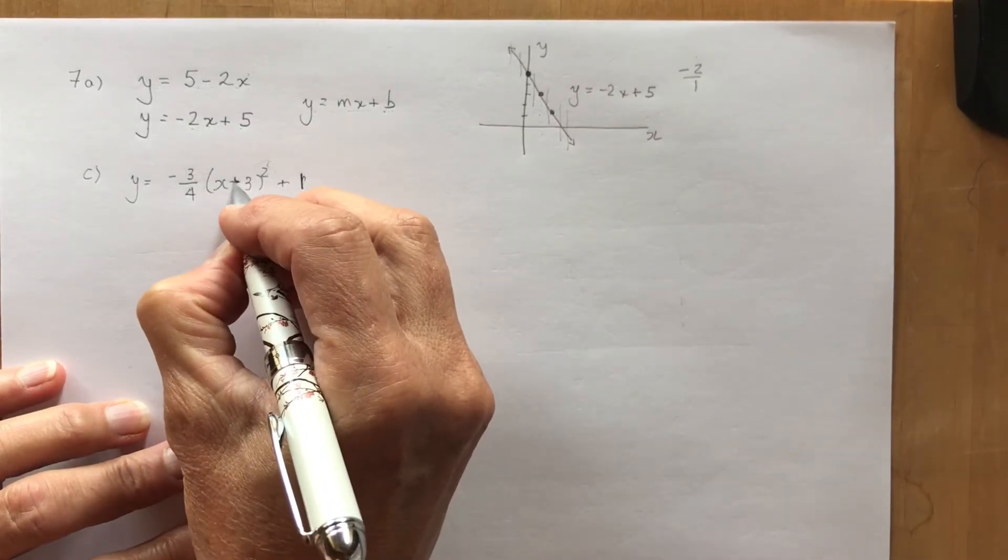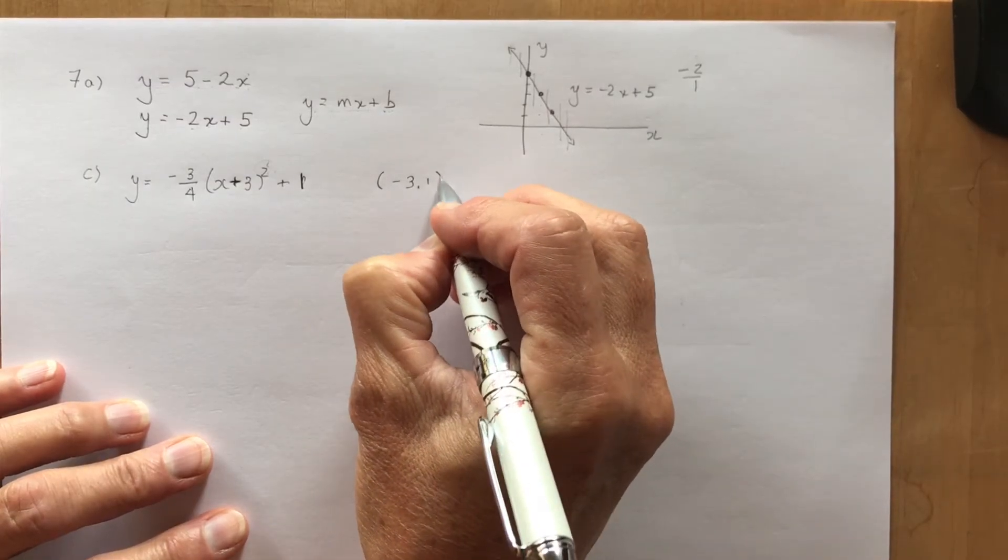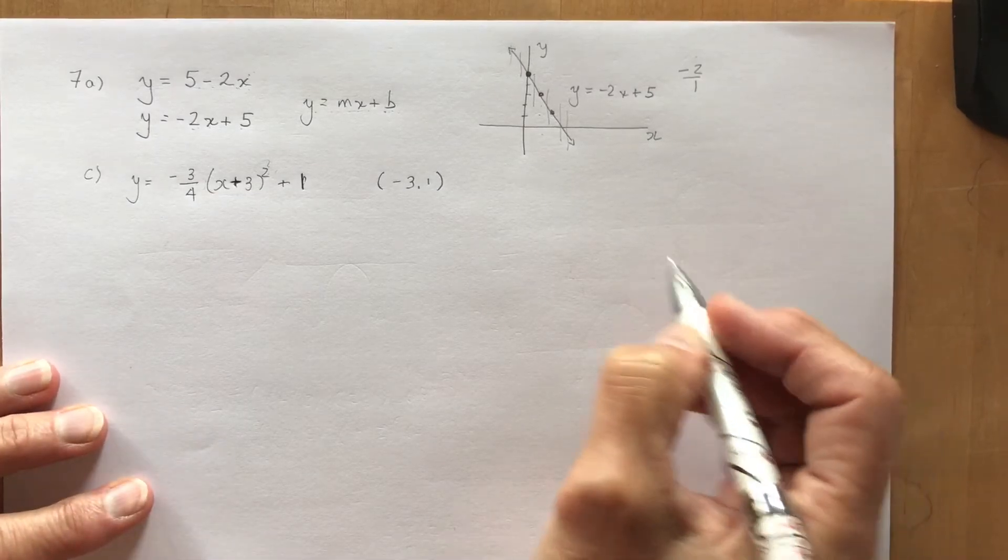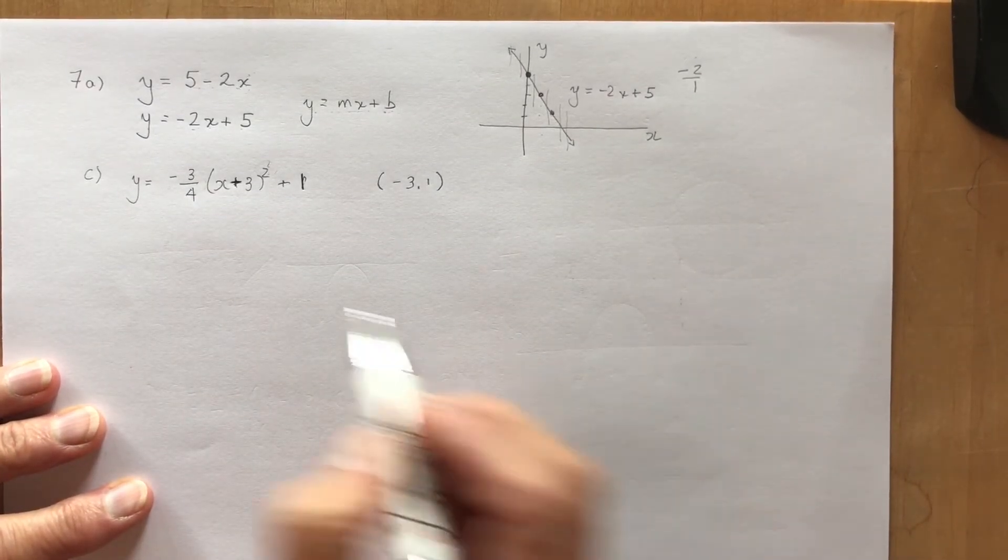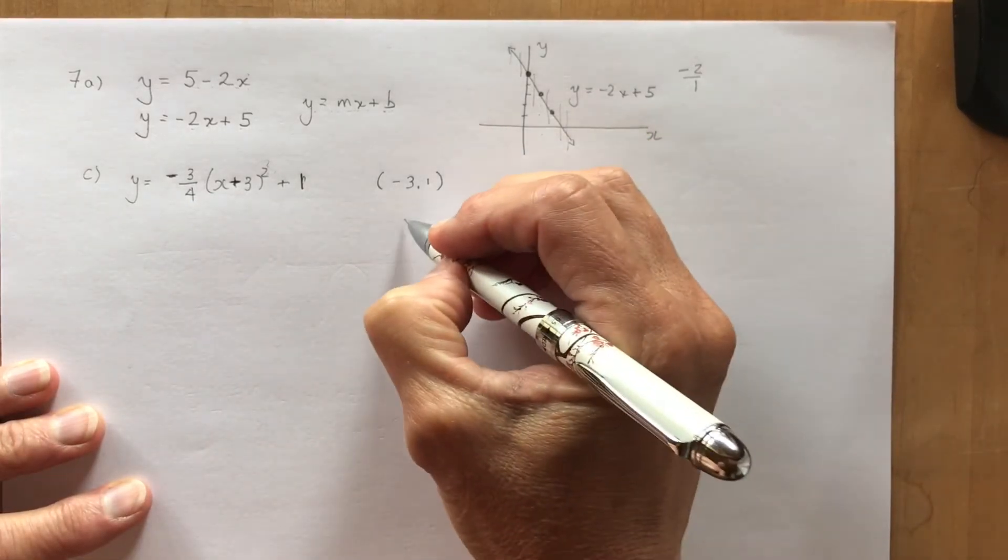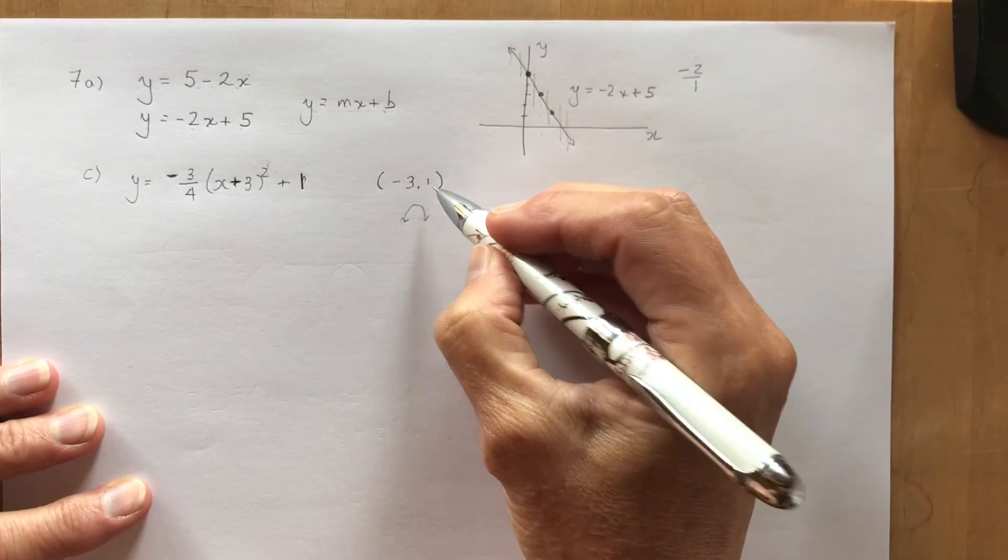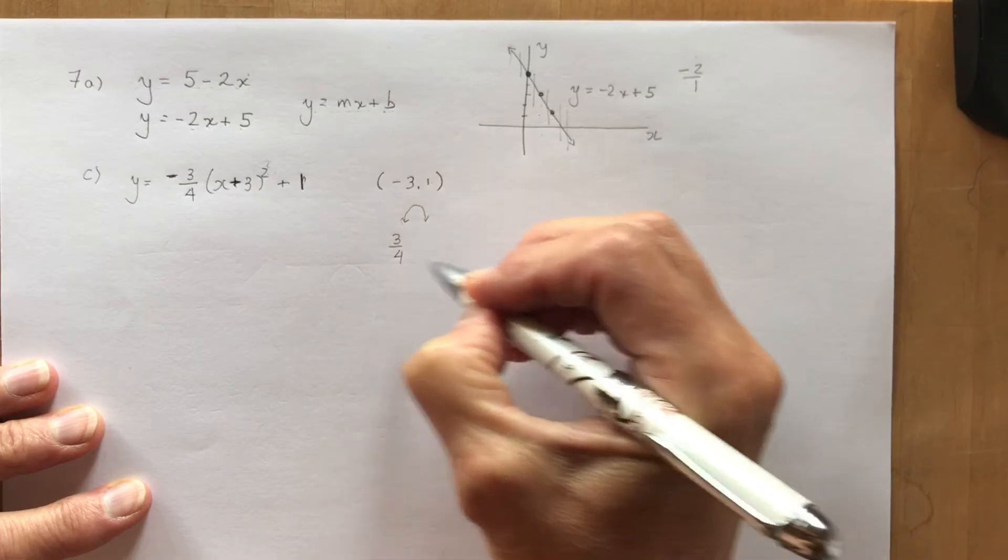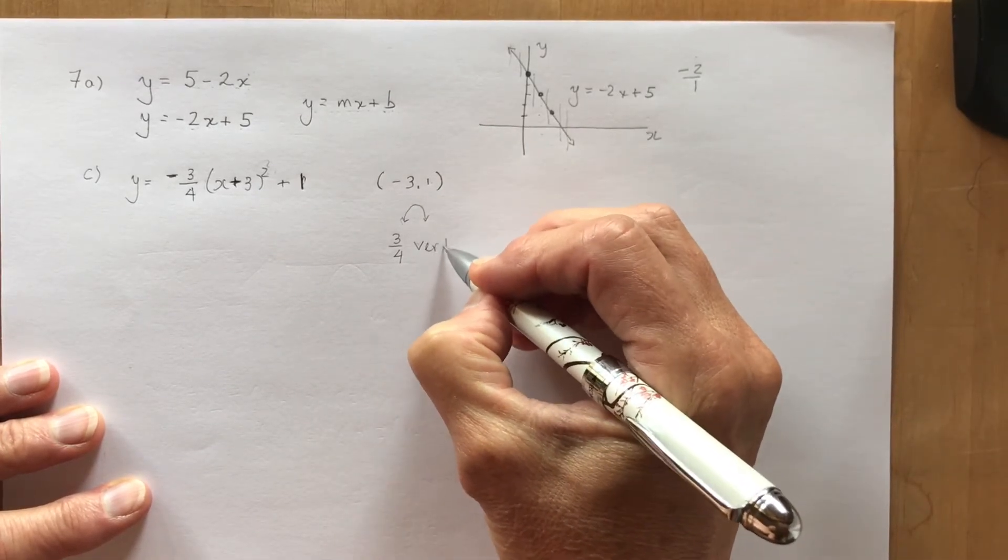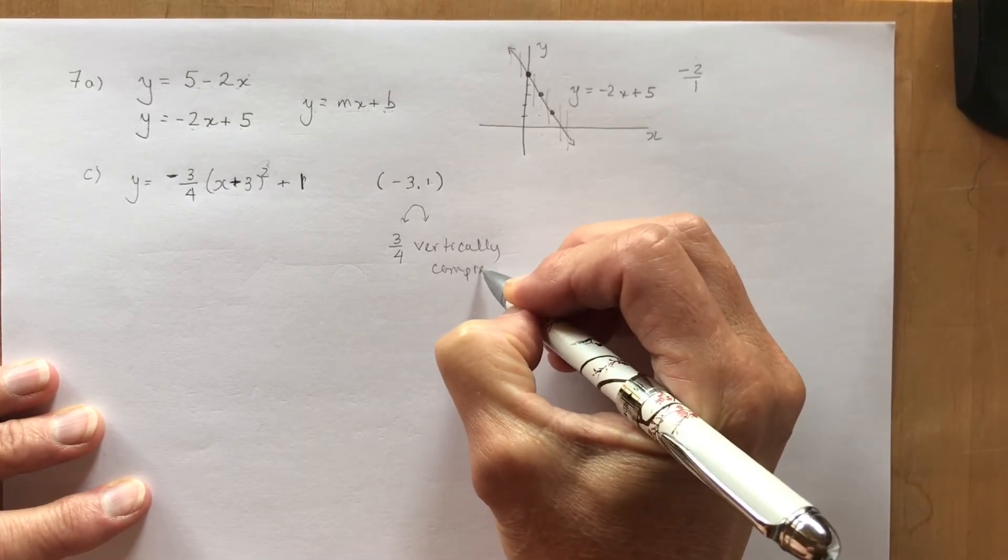If this is plus 3, it means the vertex would be minus 3 and 1. What else can we tell from this equation about a parabola? The parabola because it's negative means it's going to be concave down. I know where the vertex is and 3 quarters means that it has been vertically compressed by a factor of 3 quarters.